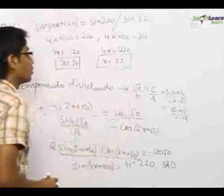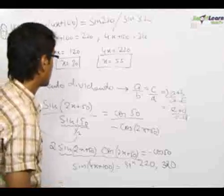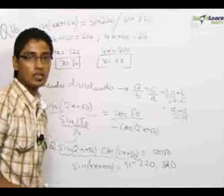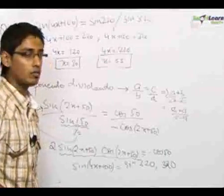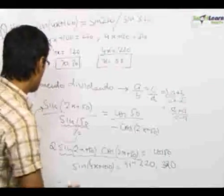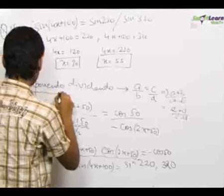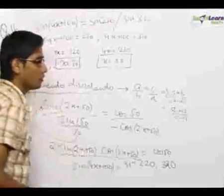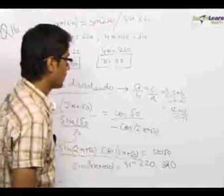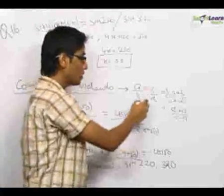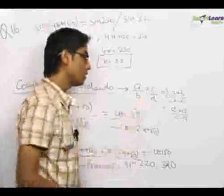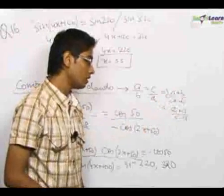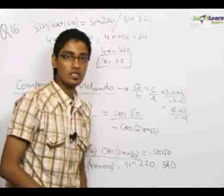So the two acute angle values of x are 30° and 55°. The important relation used in this question is componendo dividendo, which states: if a upon b equals c upon d, then a plus b upon a minus b equals c plus d upon c minus d.